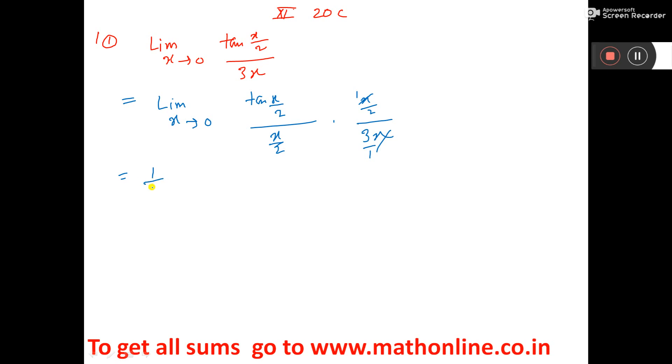That 1 by 6 I am writing in the front. And I am considering let x by 2 is equal to z. Then x tends to 0, so it will put 0 here. 0 by 2 that is 0. Z also tends to 0.